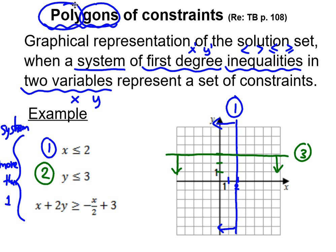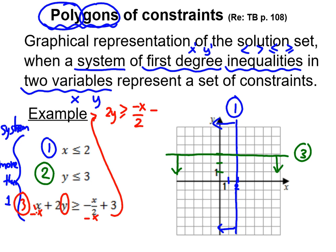The last one is the trickiest because it's a more complex inequality — you have x and y spread out on both sides. So the first thing, if you want to graph this line, it doesn't look like a line, so you need to isolate your y. Your x is going to go on the other side — minus x minus x. So now you have 2y is greater or equal to minus x over 2 minus x plus 3.